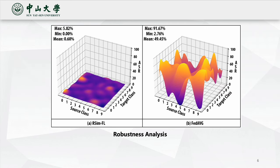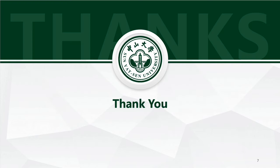Moreover, to examine the robustness of our method, we launch different types of label-flipping attacks under non-IID settings and compare the attack success rate with unshielded FedAverage. The results illustrate the ability of RSIMFL in defending various kinds of label-flipping attacks. That's all. Thank you.